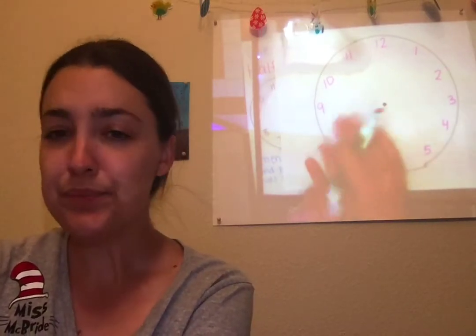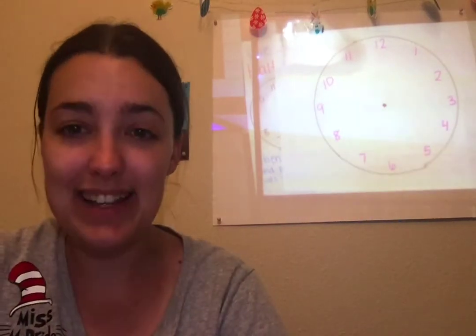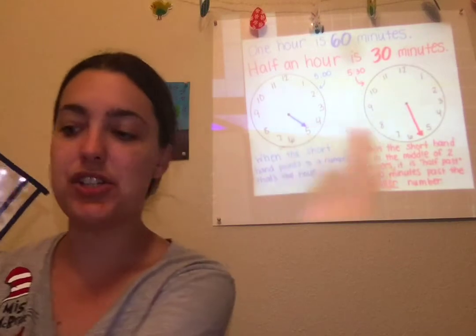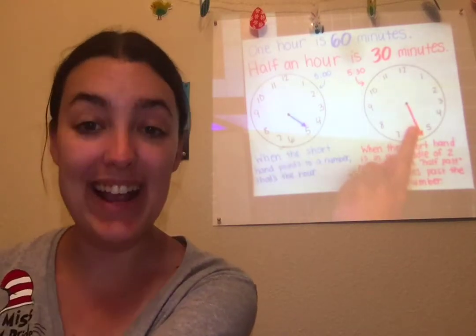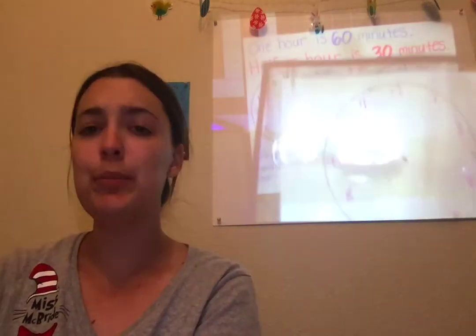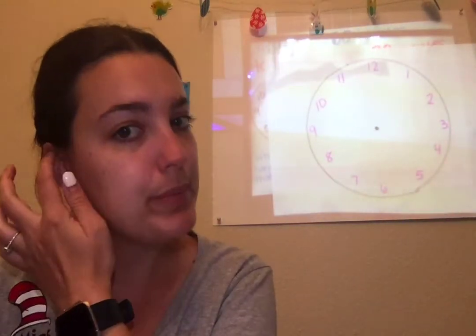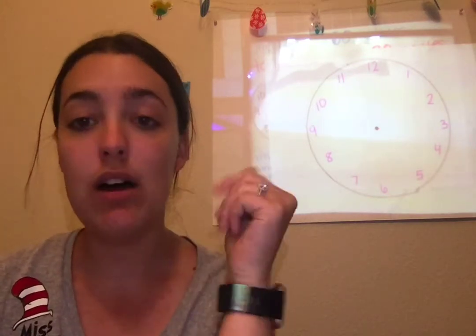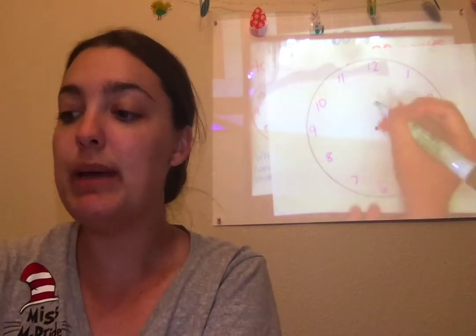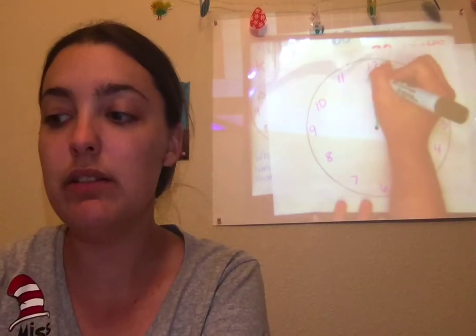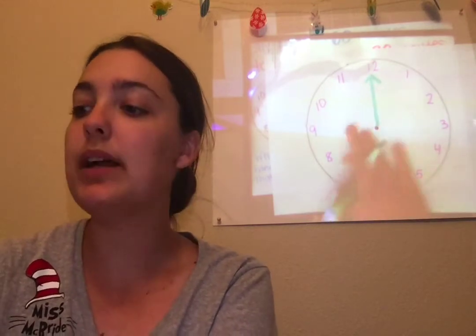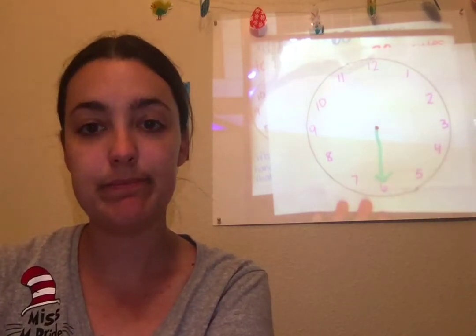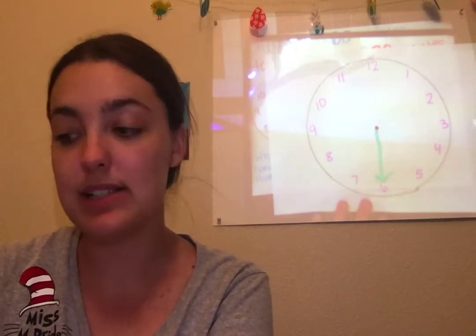What we're going to do today is add in the long hand. Normally when you look at a clock, it doesn't just have the shorthand — it has both the shorthand and the longhand. For the purposes of our lesson, and for all of first grade, there are only two places where that long hand is going to go: towards the 12 or towards the 6.